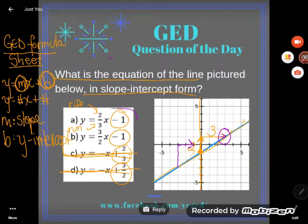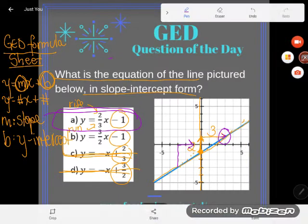Okay, so the correct answer here is A, y is equal to 2 thirds x minus 1. All right, definitely, definitely you will see graphs and equations of lines on your GED. Just period. So really a good concept to review.